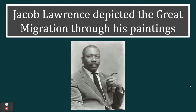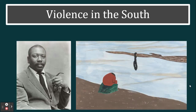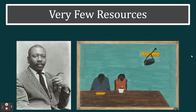Jacob Lawrence was a famous and accomplished painter who depicted the Great Migration through his paintings, known as the Migration Series. One painting represents the violence and lynchings that African Americans faced in the south, showing innocent African Americans who were hung and killed. Another painting shows a family with very few possessions because they couldn't earn enough to acquire more resources to survive.